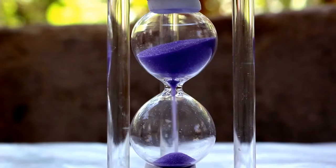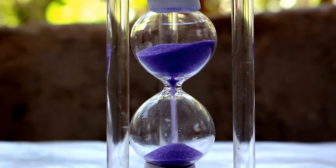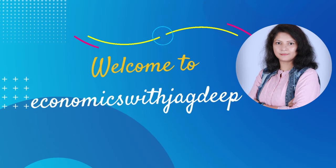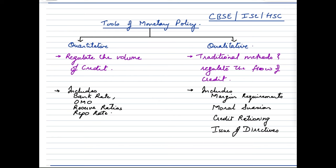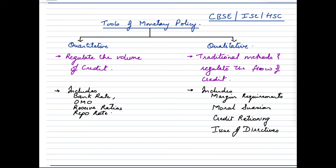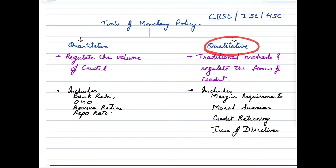Alright, so without wasting any further time, let's get started. When we talk about the tools of monetary policy, there are basically two major categories. One such category is the quantitative tools and the other one is called the qualitative tools, or the selective tools of credit control.